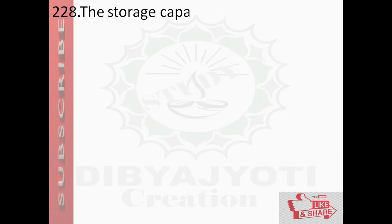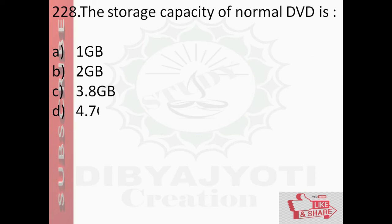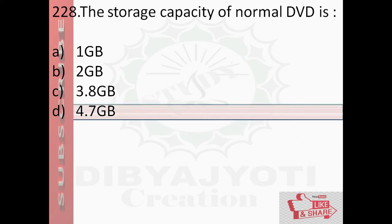Question number 228: The storage capacity of a normal DVD is — option A, 1 GB; option B, 2 GB; option C, 3.8 GB; option D, 4.7 GB. The answer is option D, 4.7 GB.